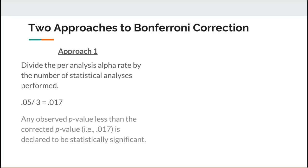Any observed p-value that is less than 0.017 can be declared statistically significant in this example of three analyses on the same sample of data. For instance, imagine you performed three analyses and got observed p-values of 0.019, 0.048, and 0.365.